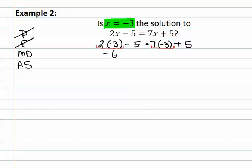This results in a negative six minus five, equaling a negative twenty one plus five. At this point, all multiply and divide have been completed, and we may now focus on add and subtract.